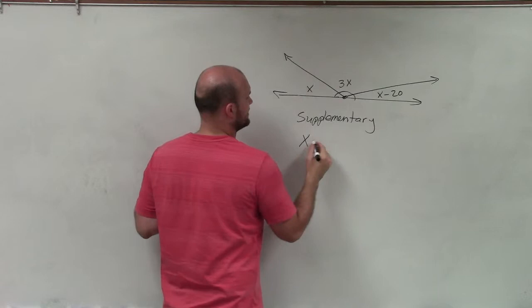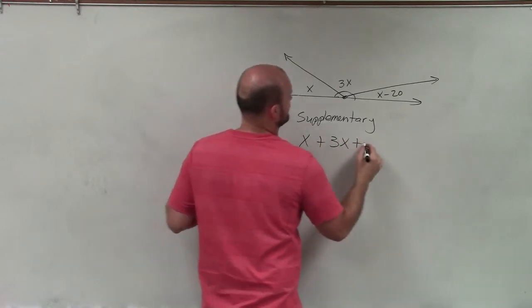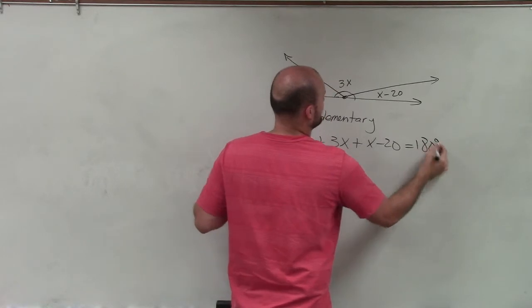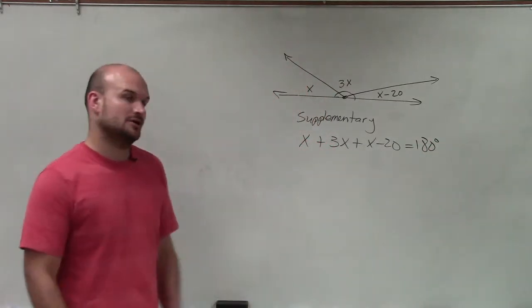And therefore, I can write the equation: x plus 3x plus x minus 20 equals 180 degrees. All these angles add up to 180 degrees.